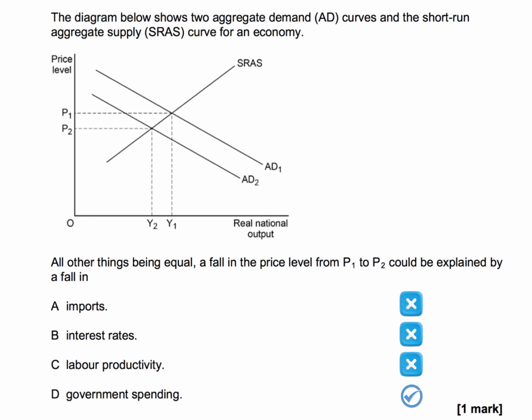Fall in government spending will cause an inward shift of aggregate demand because, of course, government spending is part of the equation. AD equals C plus I plus G plus X minus M. Fall in government spending would be an example of a contractionary or a deflationary fiscal policy.